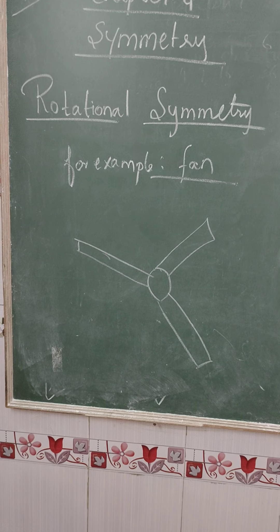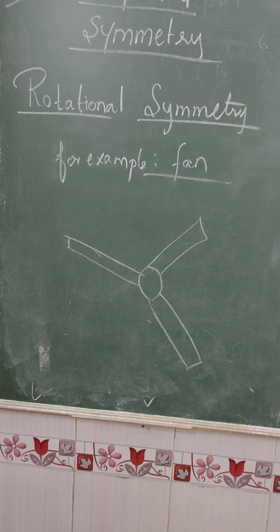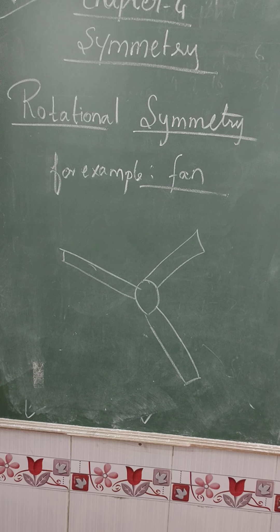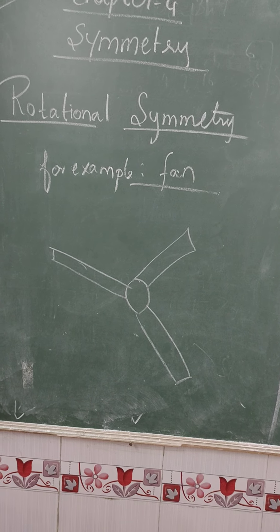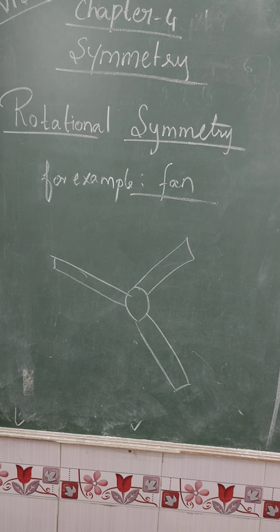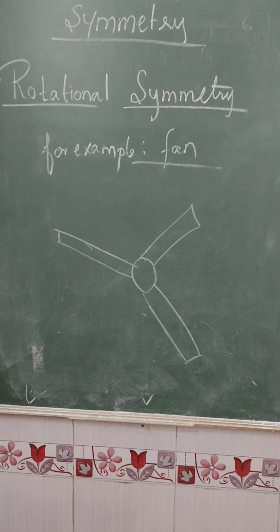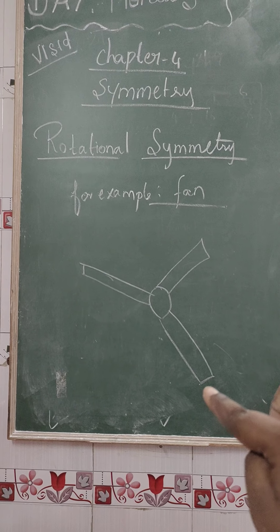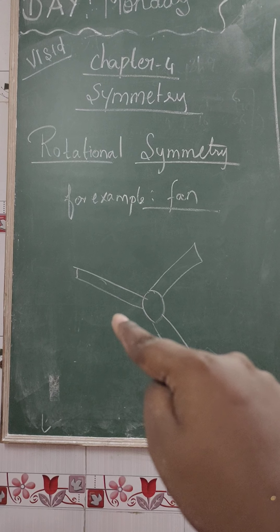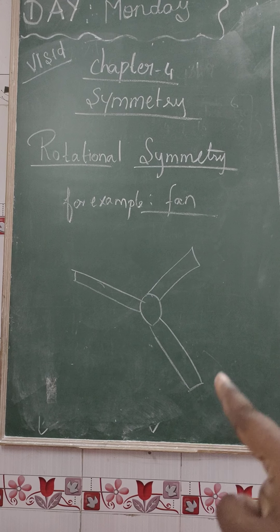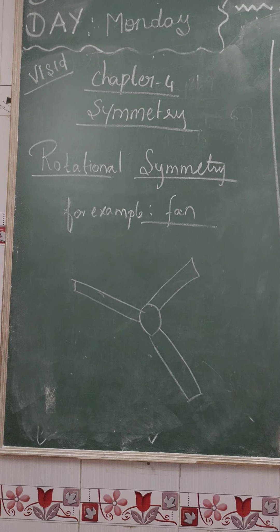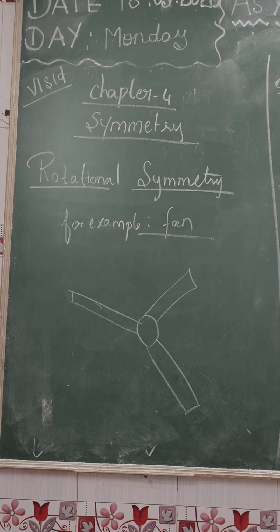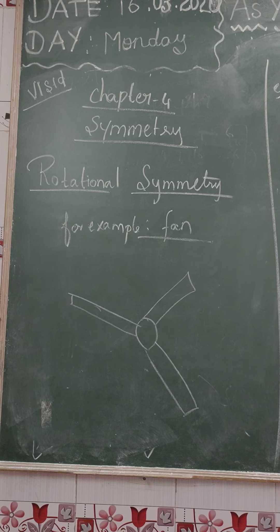Now we can see the rotational symmetry. What is rotational symmetry? For example, what is the fan? How do you rotate the fan? Let's place this to rotate. If we rotate, the shape looks the same. So this is the rotational symmetry.